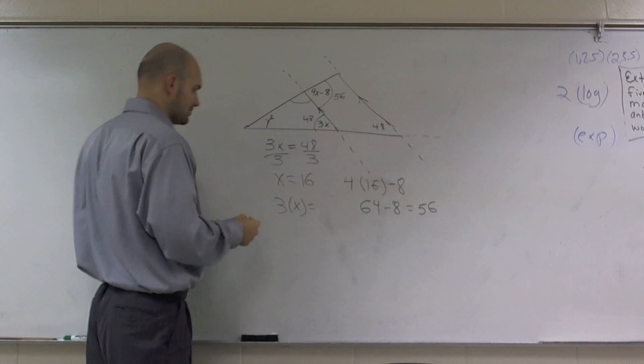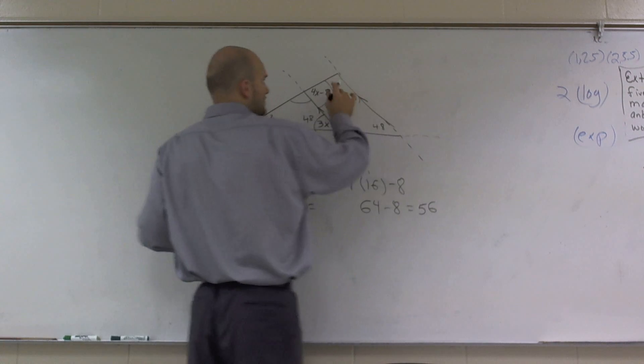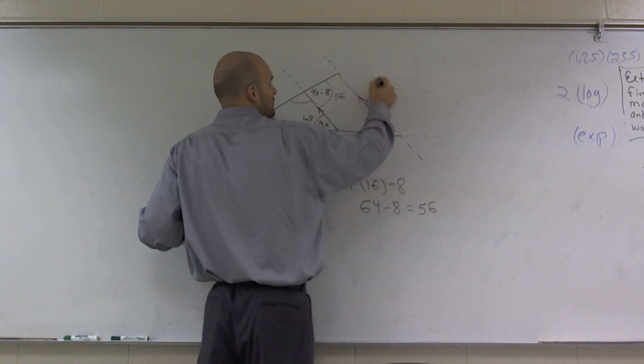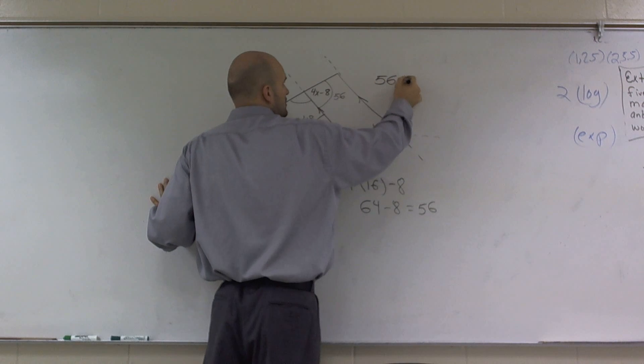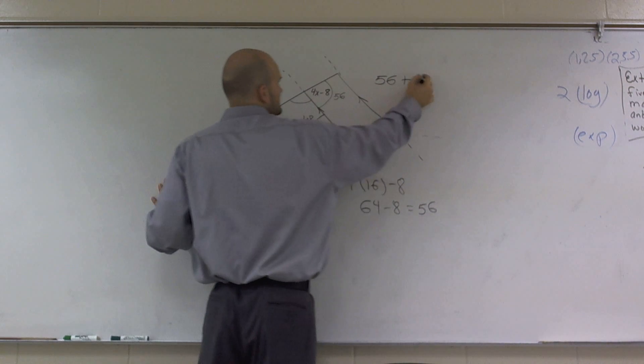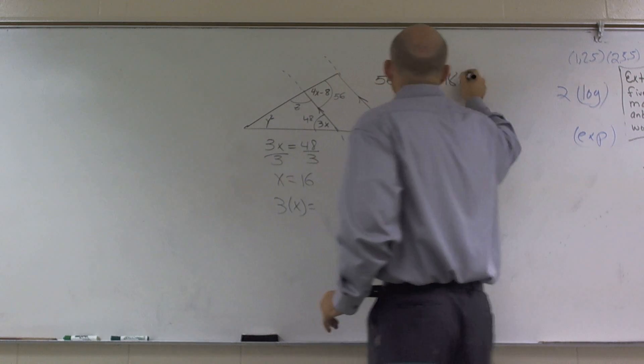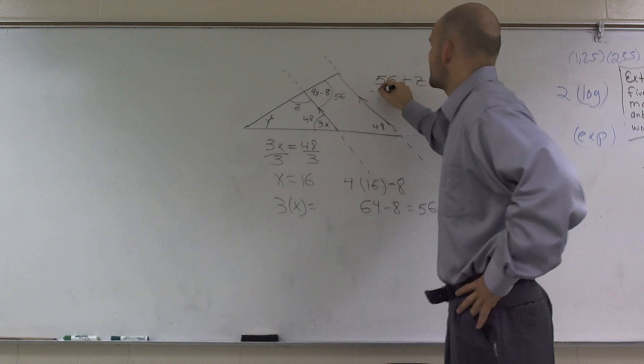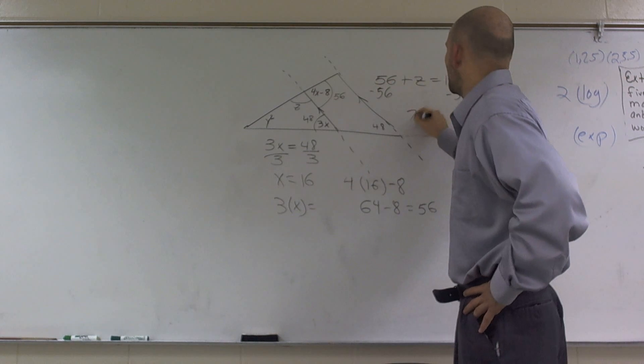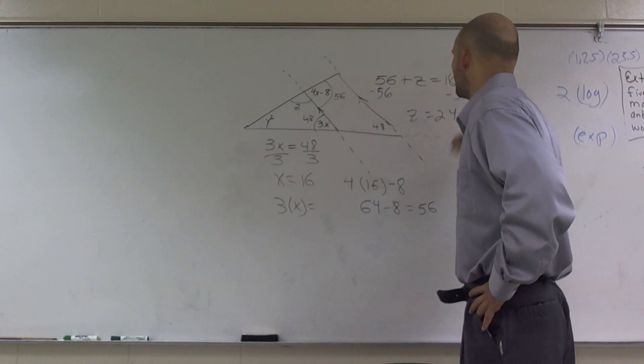Well, you should remember that straight angles add up to 180, so I could say 56 plus this angle, let's call it z, equals 180. So when I solve for z, I subtract 56, and I get z equals 24.